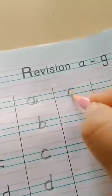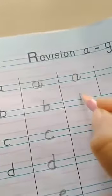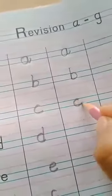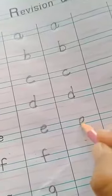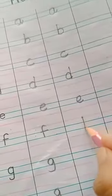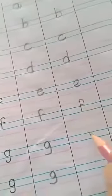Again start. A for Apple, B for Bat, C for Car, D for Drum, E for Egg, F for Fish, G for Gun. Okay.